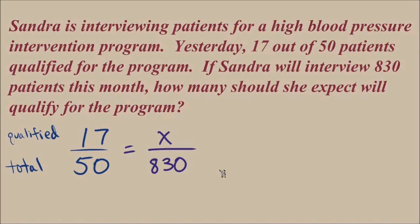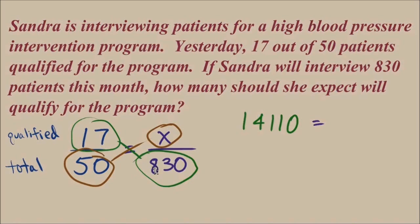Usually the quickest way to solve proportions is to multiply diagonally in one direction and know that that will equal your result from multiplying diagonally in the other direction. I'll multiply first 17 times 830 and it does not matter which diagonal you choose first. 17 times 830 is 14,110. Multiplying diagonally the other way, 50 times x is 50x. And these two results of the multiplication are equal to each other.